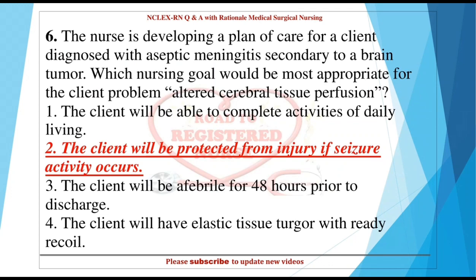Question 6: The nurse is developing a plan of care for a client diagnosed with septic meningitis secondary to a brain tumor. Which nursing goal would be most appropriate for the client problem of altered cerebral tissue perfusion? 1. The client will be able to complete activities of daily living. 2. The client will be protected from injury if seizure activity occurs. 3. The client will be afebrile for 48 hours prior to discharge. 4. The client will have elastic tissue turgor with ready recoil.